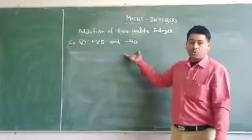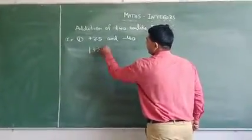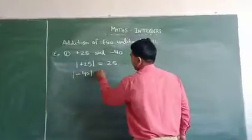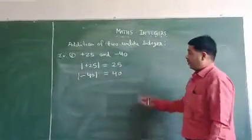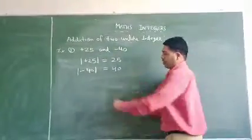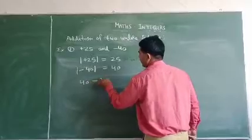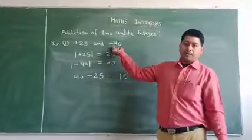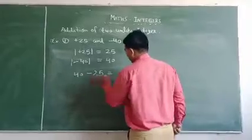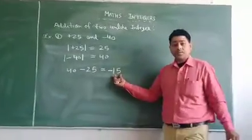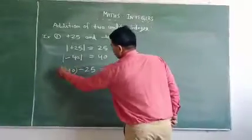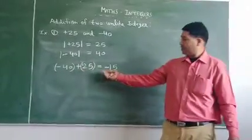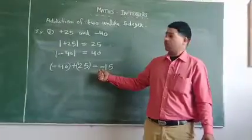Now we start the process. We find the absolute value of 25, which is 25, and the absolute value of minus 40, which is 40. In place of addition we subtract: 40 minus 25, the result is 15. Now we prefix the sign of the greater number — here 40 is greater — so the result is minus 15.